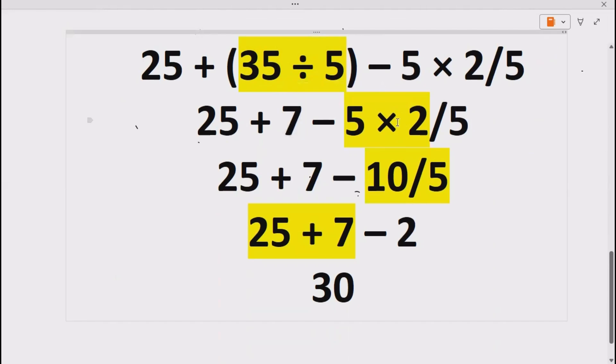Now we have all the things remain as it is. Now the next thing according to BODMAS or PEMDAS, we have to do this multiplication. So 5 into 2 gives us 10.